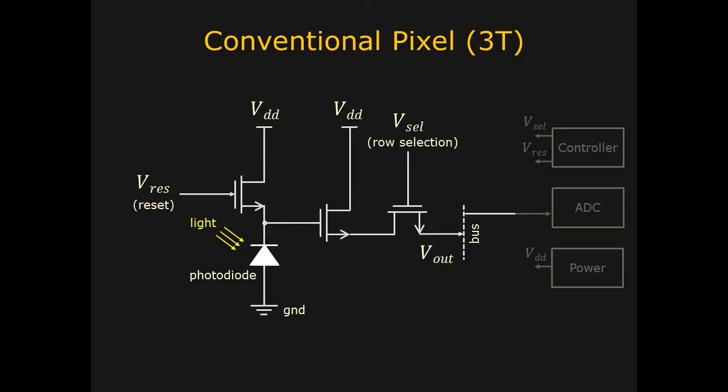Photodiode in each pixel produces an electric current when exposed to light. This mechanism enables each pixel to measure the intensity of light falling on it.